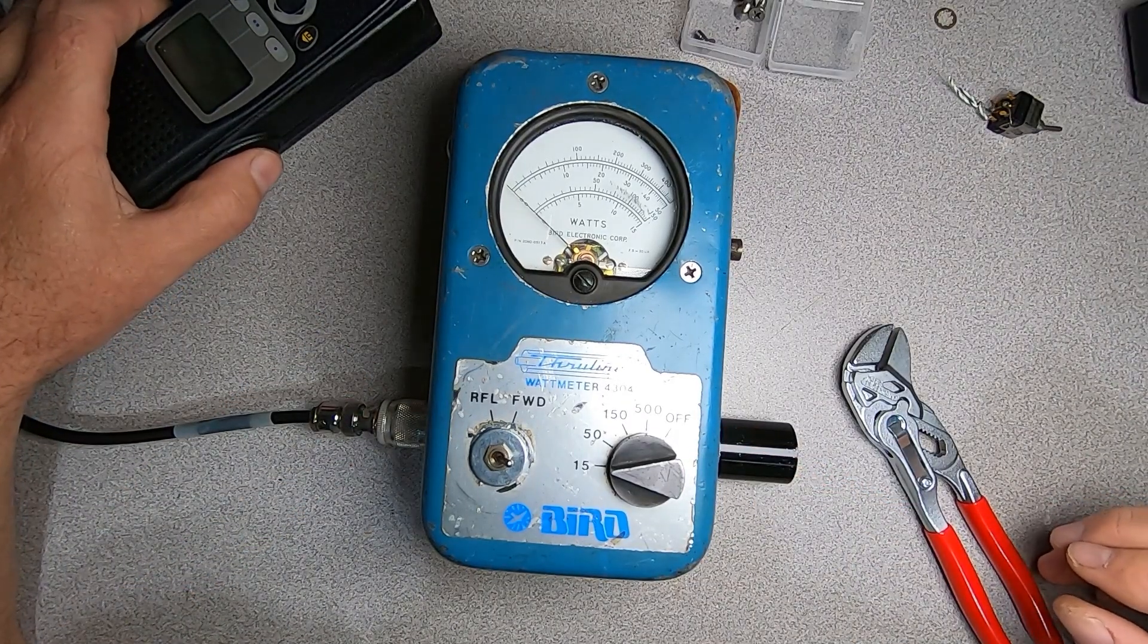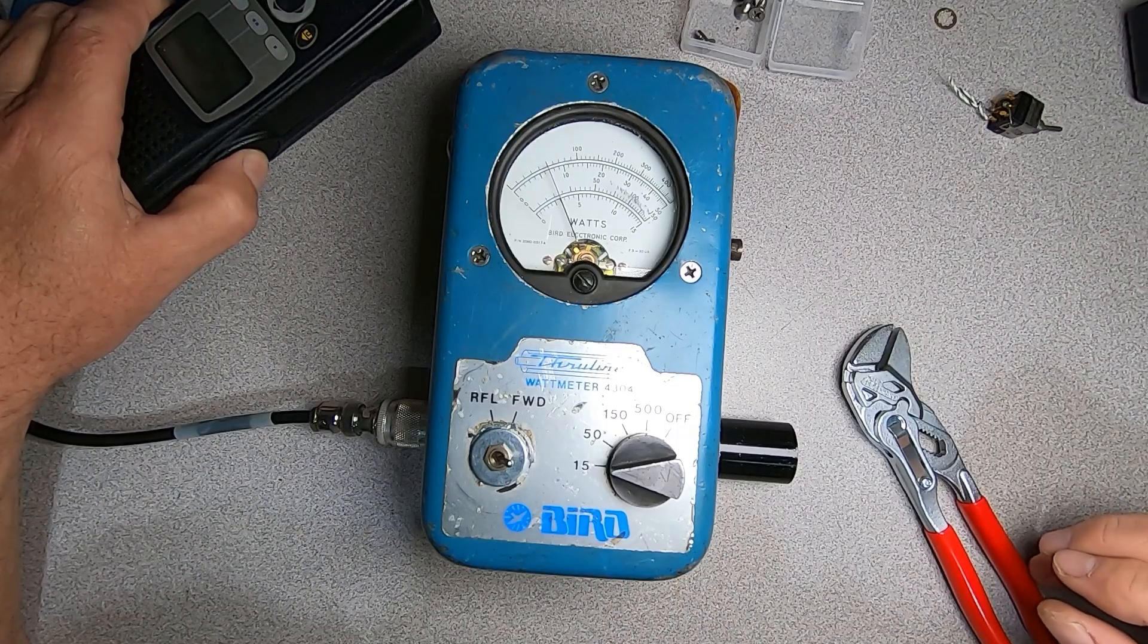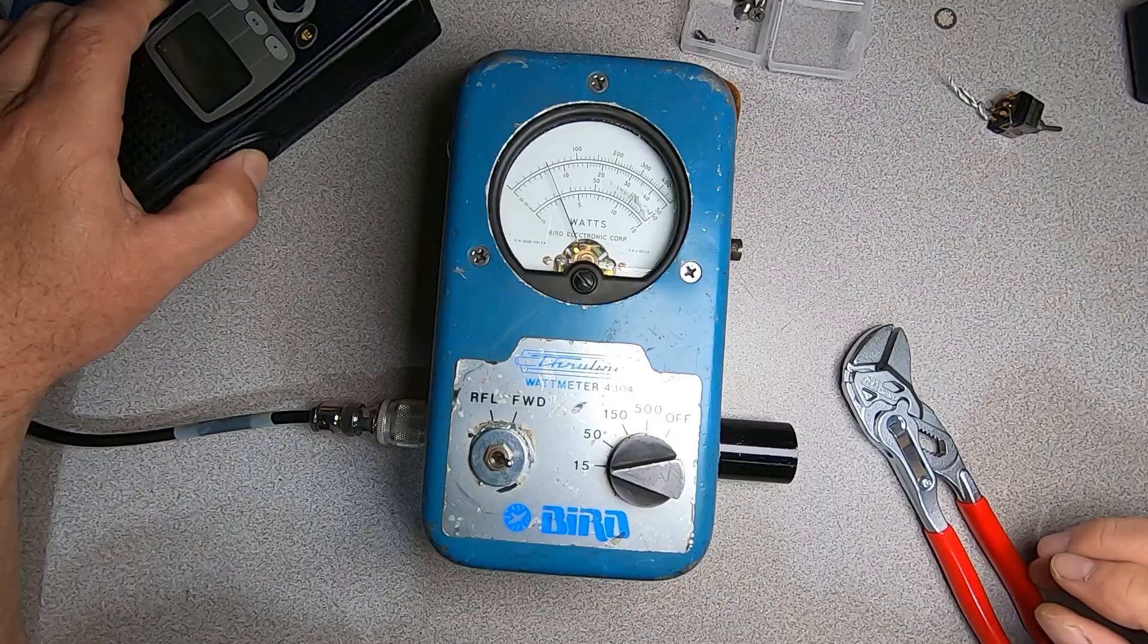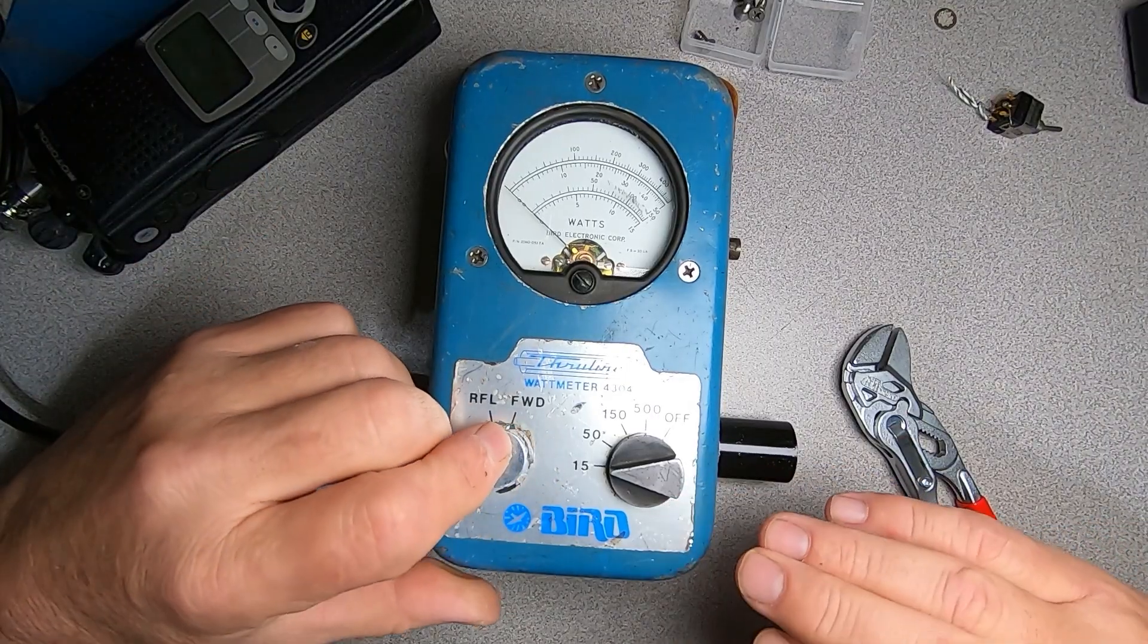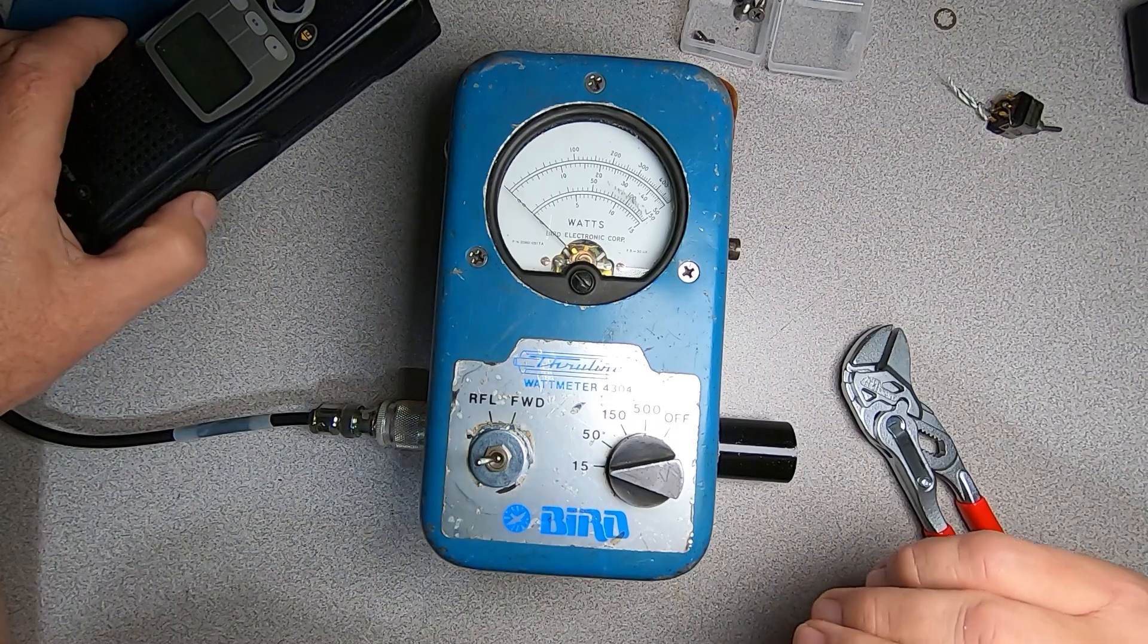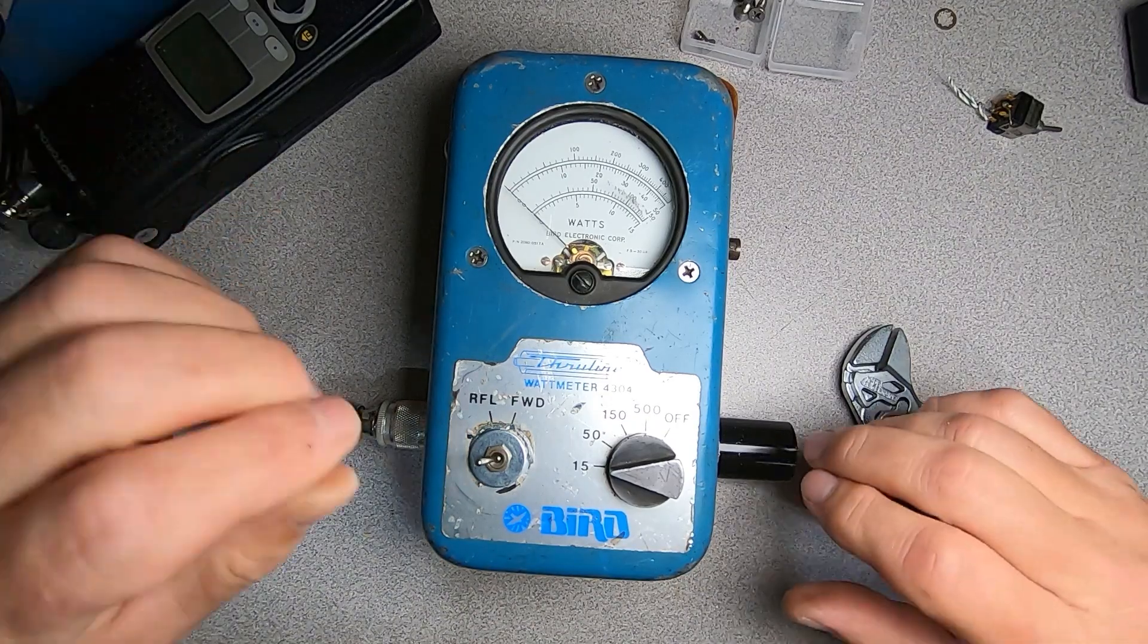Portable radio is tuned for 3 watts of forward power. And that's about where we're at there. Going to go to reflected power. See where we're at. No indication, which is good.